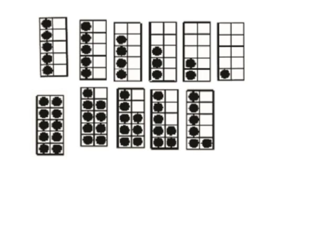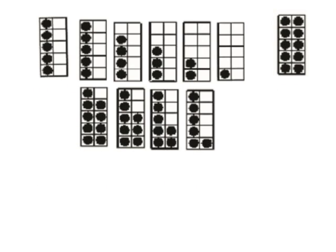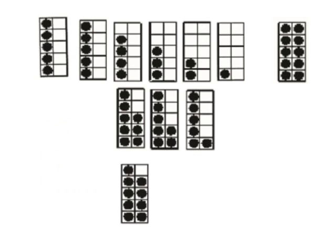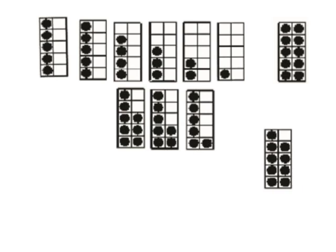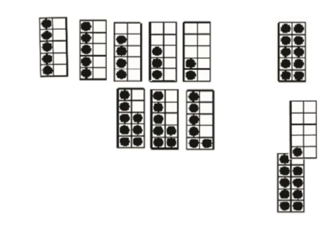So here's a 10 frame with 10, and we want to use our remaining 10 frames to find number bonds to 10. So here I can take this 9 and I could take this 1 and put them together, that gives me a 10. I can take this 8 and this 2 and put those together, that gives me 10. I can take this 7 and this 3 and that makes 10.